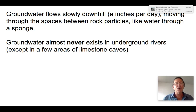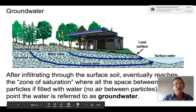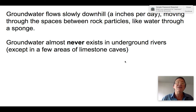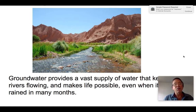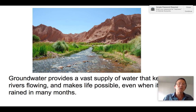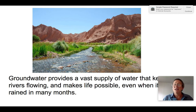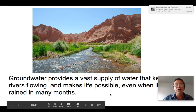Groundwater, contrary to what many people think, almost never occurs as underground rivers. Think of it more like a water-filled sponge slowly oozing water through it. The only place you'd ever find underground rivers is in limestone cave systems. Because groundwater releases so slowly, rivers can continue to flow even in dry months — it may have rained in the mountains in winter, but by late summer that groundwater is still oozing through and coming out. Groundwater feeds river systems, and water equals life.